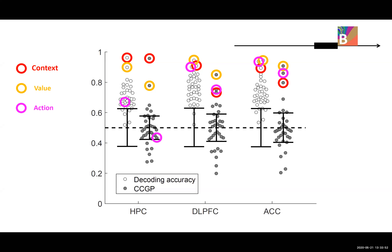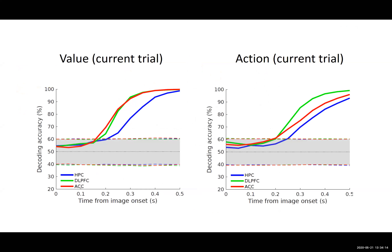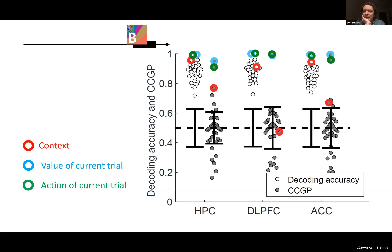Q: What happens with correlated input variables? A: When two variables are highly correlated, we don't yet know what happens. In that case you would probably need to encourage the network to create independent factors, similar to approaches in variational autoencoders. We haven't studied this case yet, but it's an interesting direction for future work.